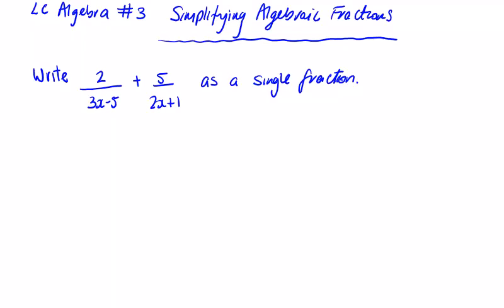In this video, we're going to look at simplifying algebraic fractions. If you're asked to write something like 2 over 3x minus 5, plus 5 over 2x plus 1, as a single fraction, the simplest thing to do — going back to primary school simplifying fractions — is to multiply the two denominators.